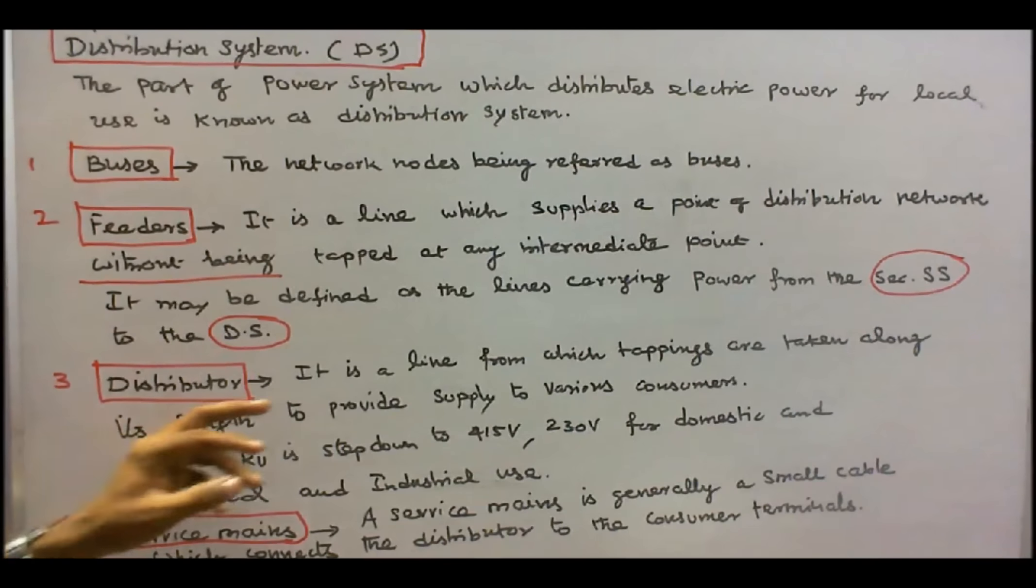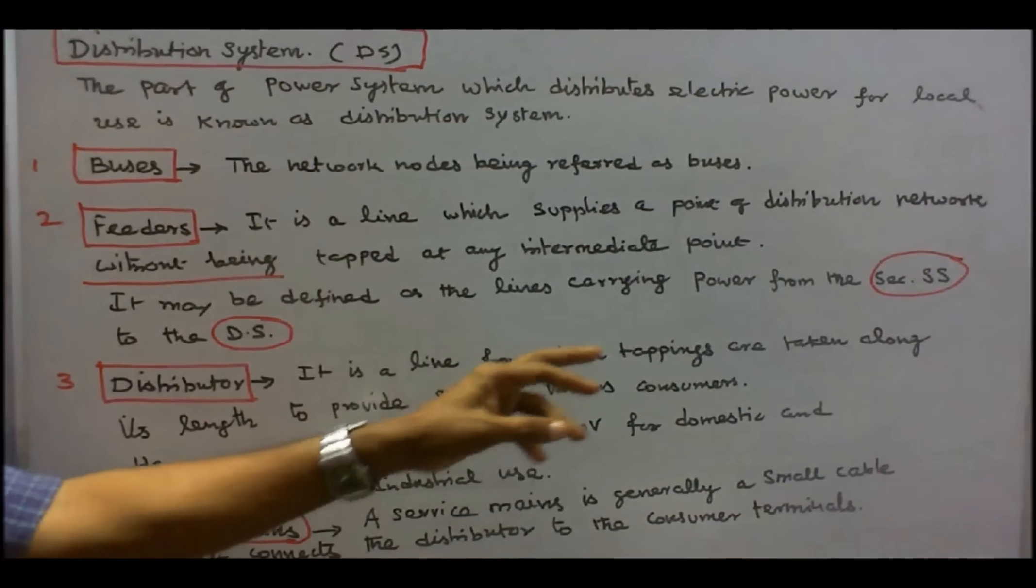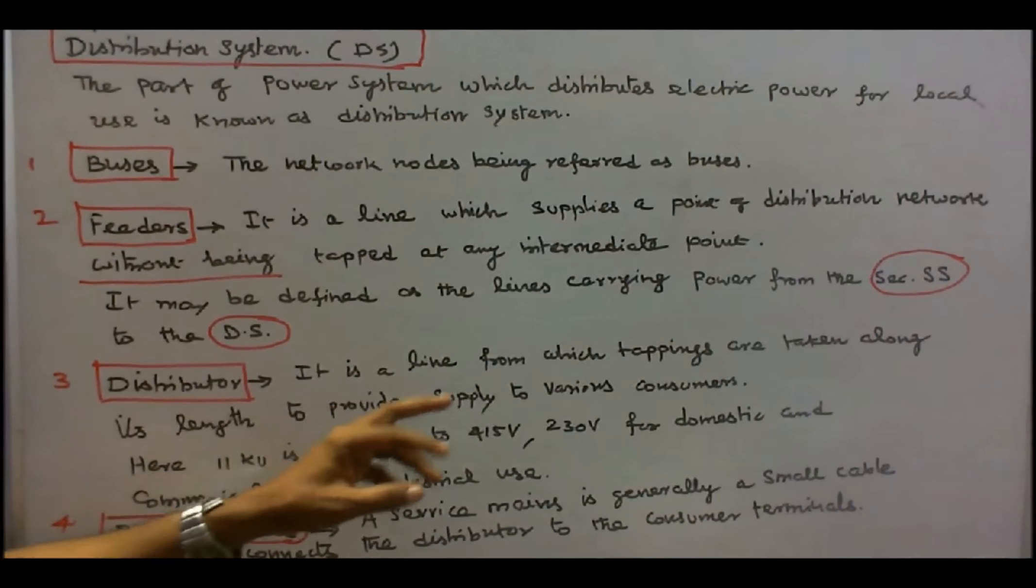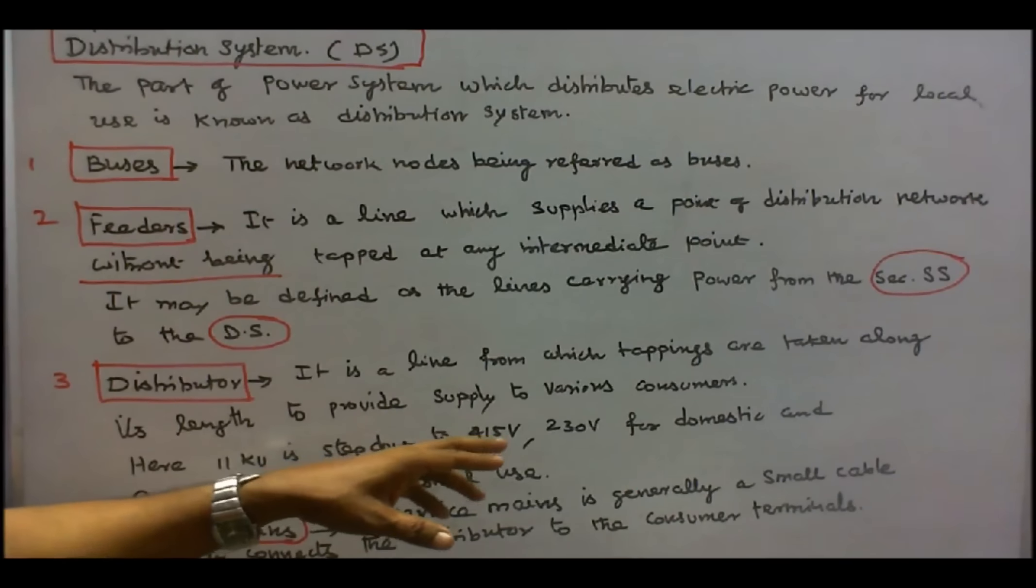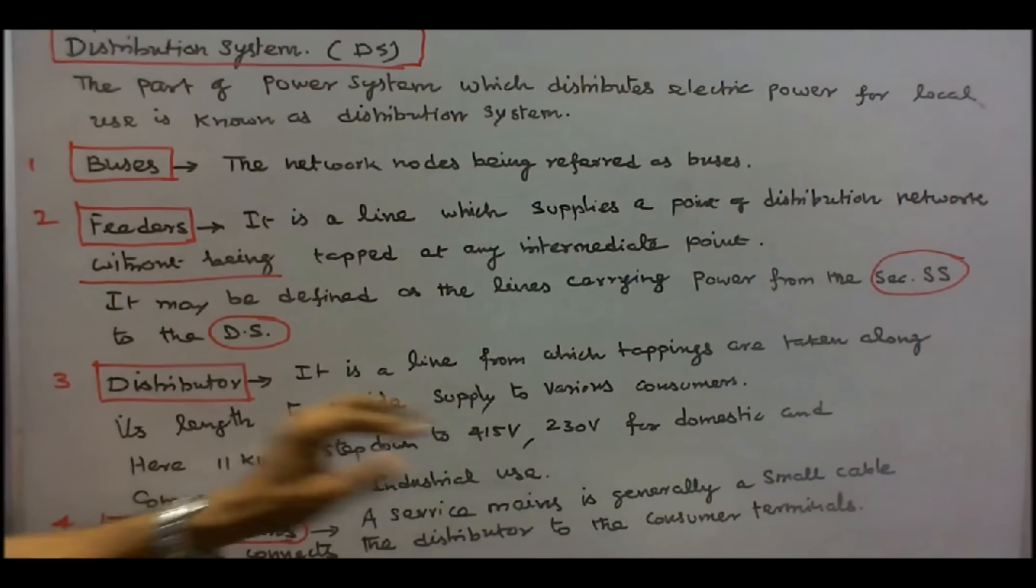Number three, distributor. It is a line from which tappings are taken along its length to provide supply to various consumers. Here, 11KV step down to 415 or 230 for domestic and commercial and industrial use.